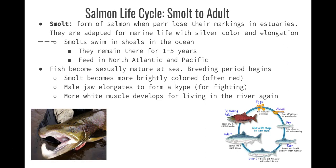The smolt is a form of salmon with no parr marks — they're longer, living in estuaries, starting to adapt for marine life with a silver color. Smolts live in shoals in the ocean and can remain there for one to five years, feeding in the North Atlantic and the Pacific. The fish become sexually mature in the ocean. Breeding begins when the smolt becomes brightly colored — often red — indicating sexual maturity. The male jaw will elongate to form a kype, used for fighting, and more white muscle develops to help them go back to the river.